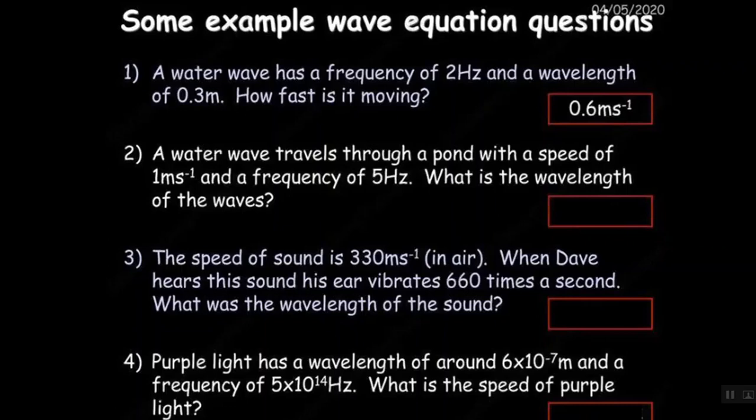A water wave travels through a pond with a speed of 1 meter per second and a frequency of 5 Hz, so I'm going to say 1 divided by 5 and that gives me 0.2 meters. The speed of sound is 330 meters per second in air, depending on which syllabus you're using there's a more specific value. When Dave hears the sound his ear vibrates 660 times, what is the wavelength of the sound? Vibrations per second is another way to state frequency, so it is speed of sound divided by frequency which gives us 0.5 meters.